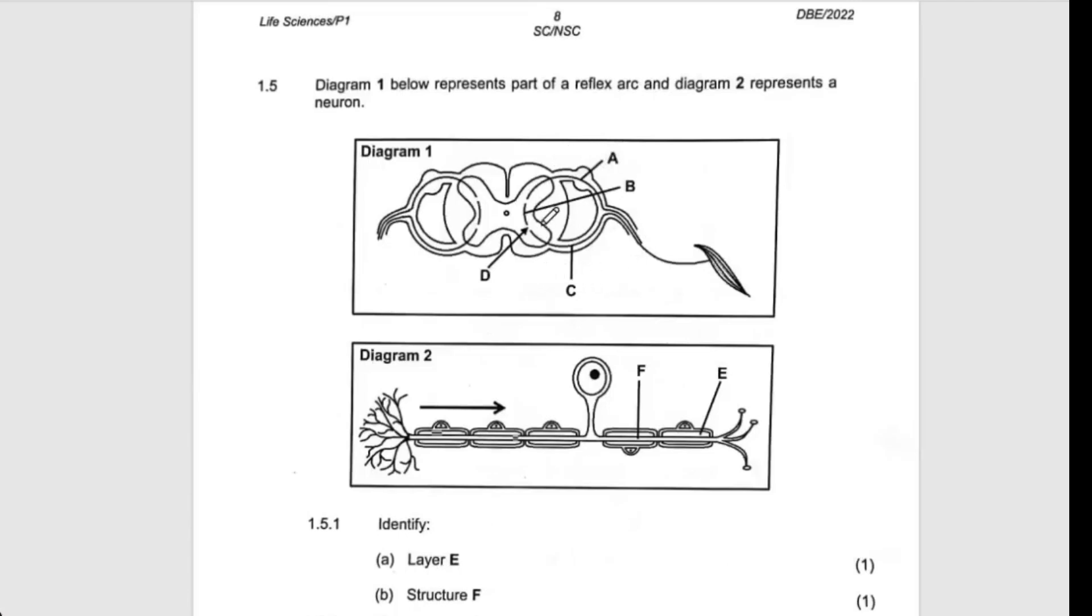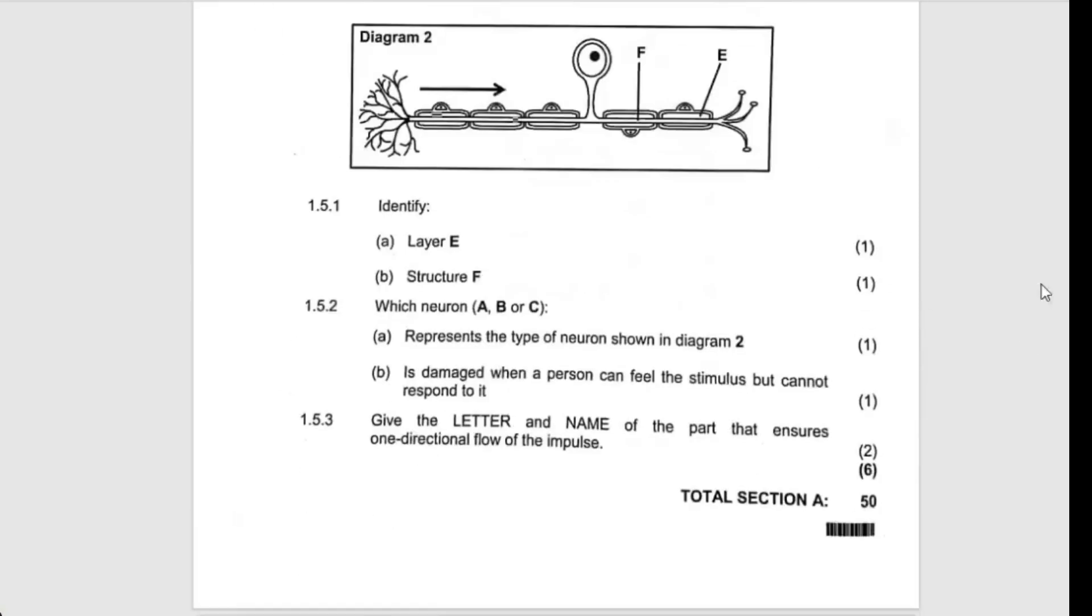You must know how to label all this. This one comes from where, this one goes from where. You have here a ganglion, therefore it becomes sensory neuron, becomes connector neuron, becomes motor neuron, and then this space becomes the synapse.